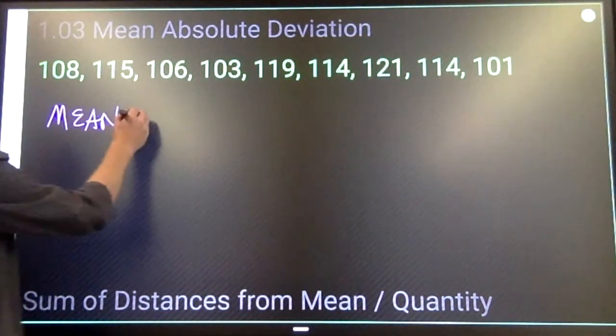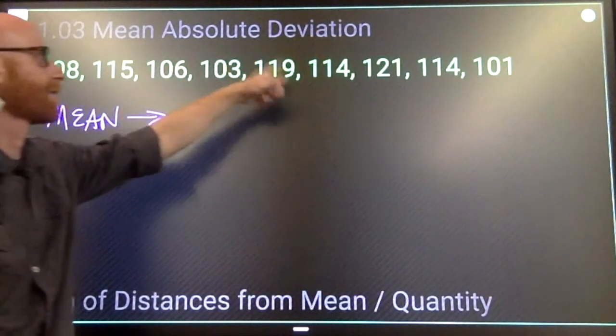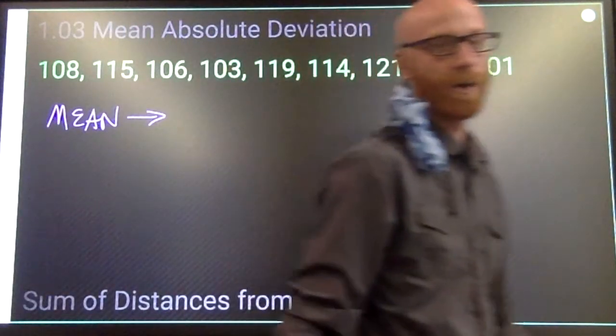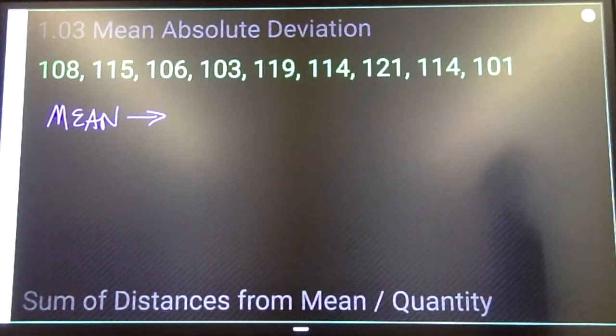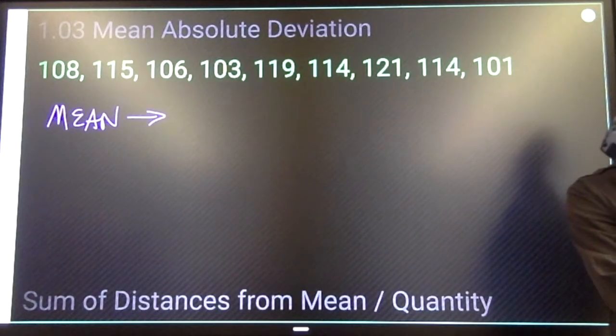Which means add all these numbers up and divide by 1, 2, 3, 4, 5, 6, 7, 8, 9. If you don't know how to find a mean, you want to scroll back to a video called measures of central tendency.